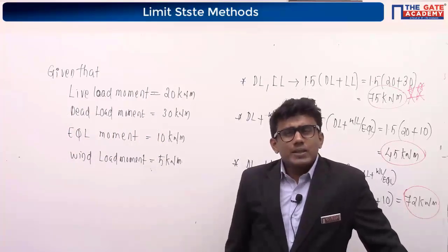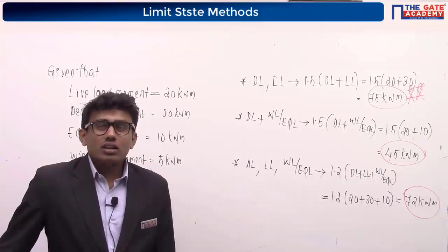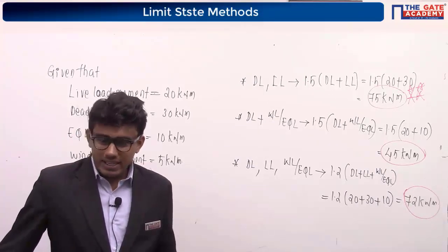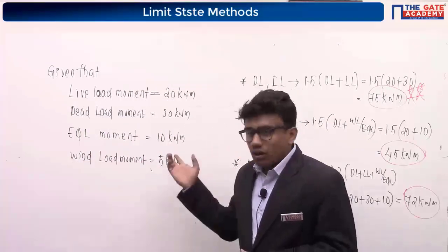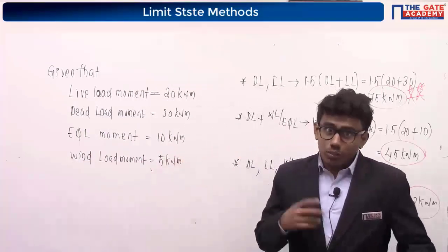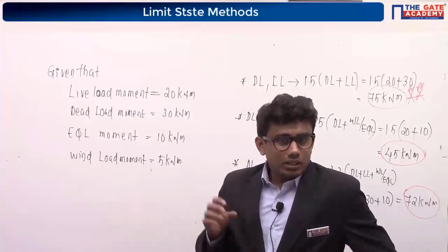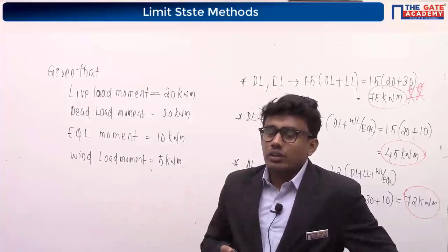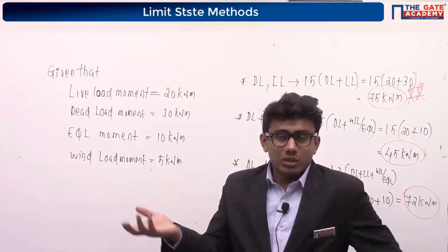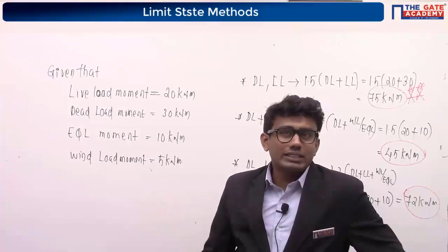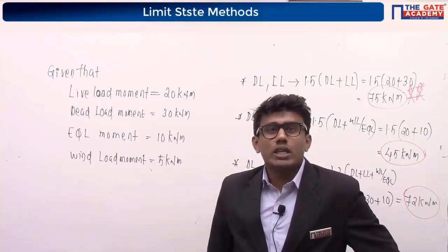To summarize the key rules: for DL+LL use 1.5, 1.5; for DL+WL/EQ use 1.5, 1.5; for all three use 1.2, 1.2, 1.2. Take the maximum of wind load and earthquake load. When reversal of stresses or stability against overturning is involved, use 0.9 instead of 1.5.